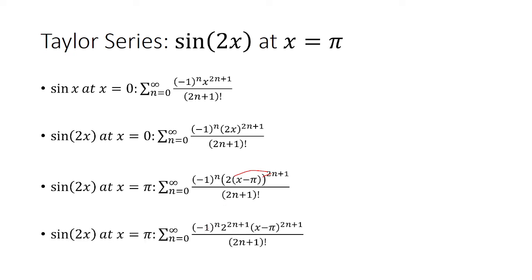So we get negative 1 to the nth power times 2 raised to the 2n plus 1, and then multiply that by x minus pi raised to 2n plus 1 over 2n plus 1 factorial.